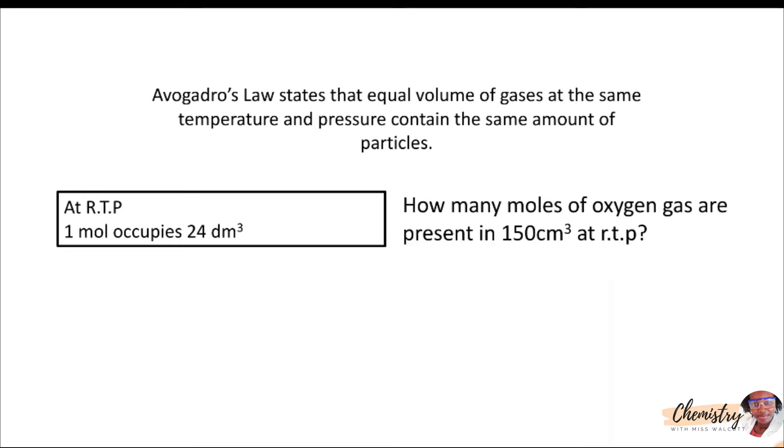If we were asked to find how many moles of oxygen representing 150 cm cubed, the very first thing we need to do is to convert from cm cubed to dm cubed, since our statement is in dm cubed. To convert from cm cubed to dm cubed, divide by 1000. So 150 cm cubed would be equal to 0.15 dm cubed.